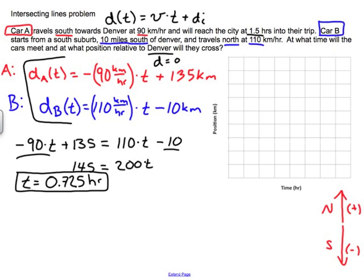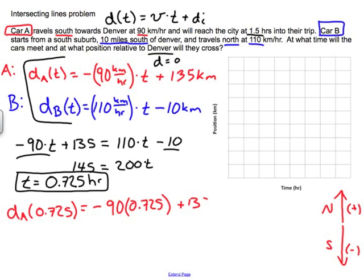Now that I know the time, I can plug it into either equation to find the position where they cross. For Car A, leaving out units: D_A(0.725) = −90 × 0.725 + 135, which equals 69.75 — bringing units back, that's 69.75 kilometers. Note that the function notation on the left side is not multiplication; it means the position at that time.